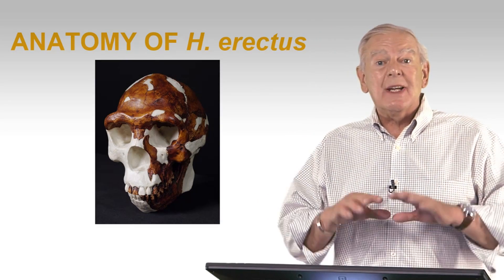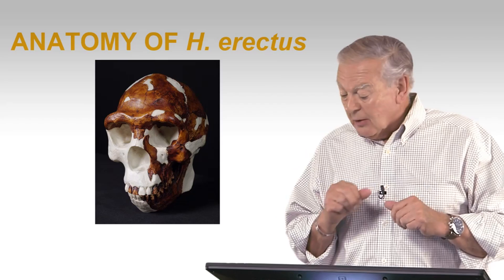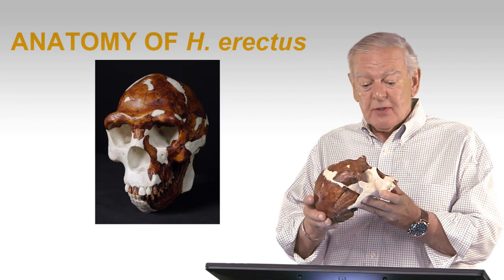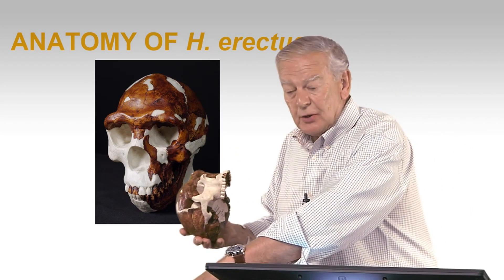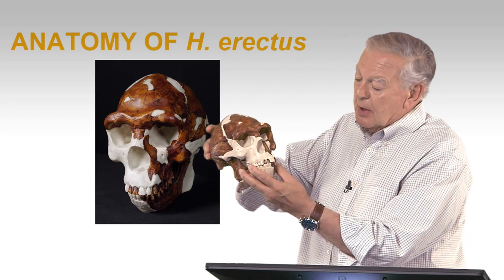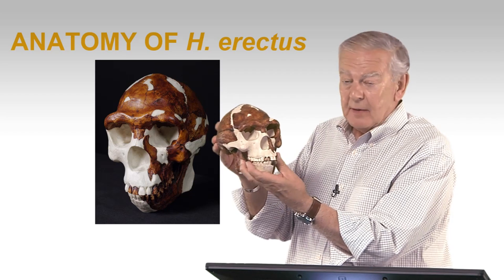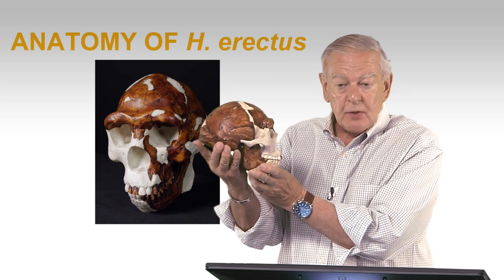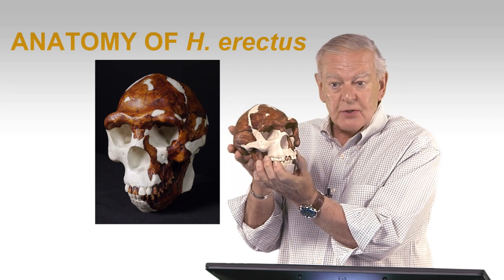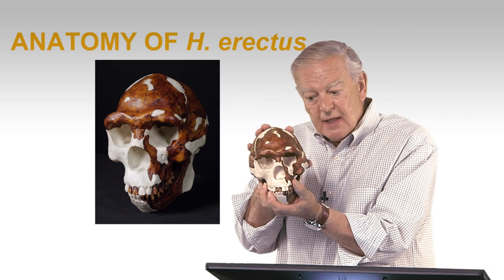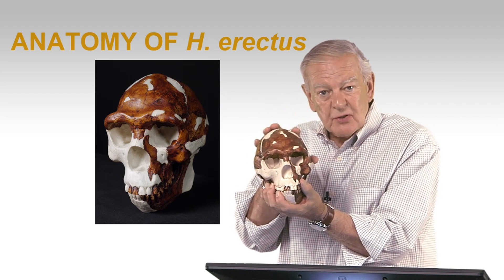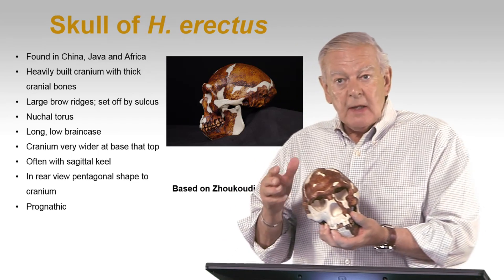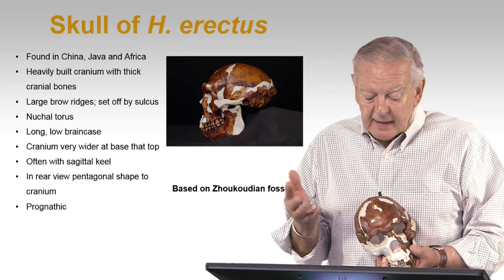Let's take this opportunity to look at the anatomy of Homo erectus, sort of a stylized example, and that comes in this incredible reconstruction, which originally was done by Weidenreich, but more recently redone by Gary Sawyer at the American Museum of Natural History. It gives us an idealized version of the features most characteristic of this species. As we know, they're found in Java, in China, and in Africa.